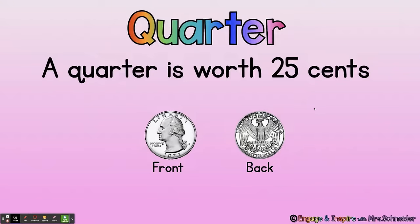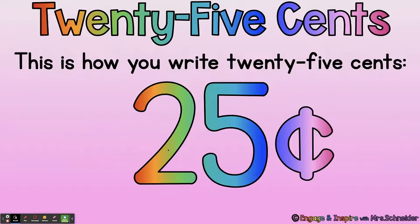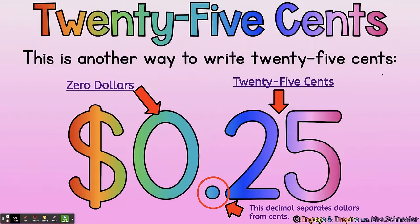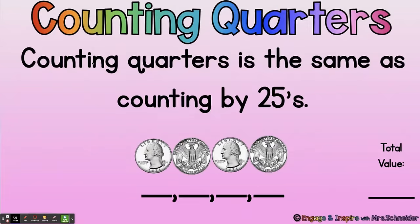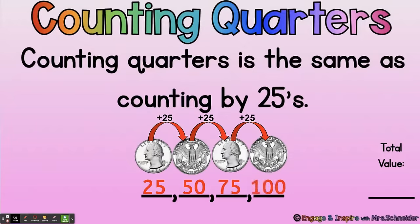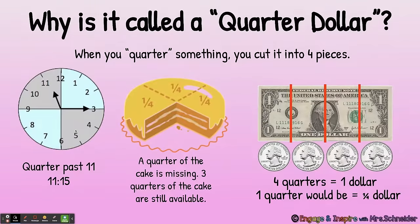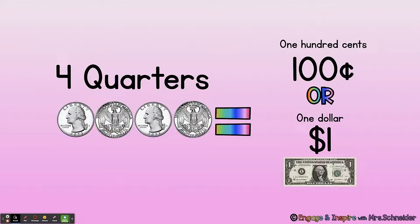A quarter is worth 25 cents. This is how you write 25 cents: twenty-five cents. Another way to write 25 cents: dollar sign, zero dollars, a decimal point to separate the change, and twenty-five cents. Counting quarters is the same as counting by twenty-fives: twenty-five, fifty, seventy-five, one hundred. The total value of four quarters is one hundred cents — four quarters equals one hundred cents or one dollar.